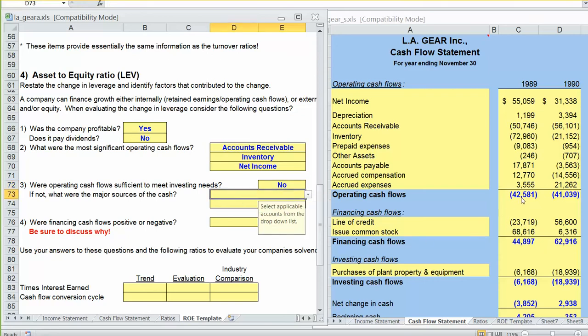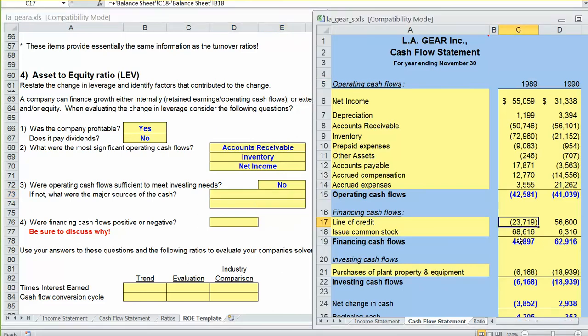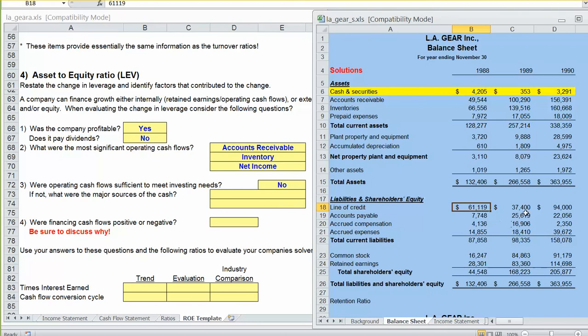Well, if operating cash flows weren't enough to meet our investing needs, the next question becomes, what was our major source of cash? We can see in 1989, we actually paid down our line of credit. And if we look at our balance sheet, we can see that cash outflow or that change in cash. Our line of credit went from 61,000 down to 37,000. So we had a use of cash in 1989.